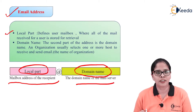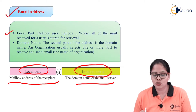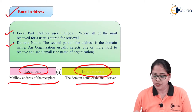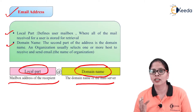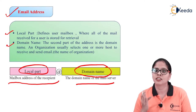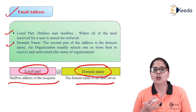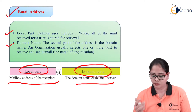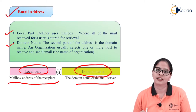The local part defines the user mailbox where all mail received by the user is stored for retrieval. The domain name is the second part of the address — basically the domain name of the mail server. If it is Google, then gmail.com; if it is Yahoo, then yahoo.com; if it is TCS, then tcs.com; if it is Reliance, then rcom. In an organization, they usually select one or more hosts to receive and send the mail.